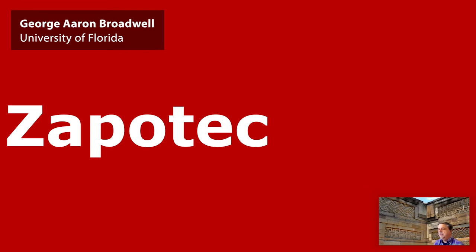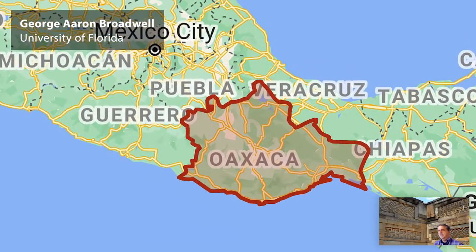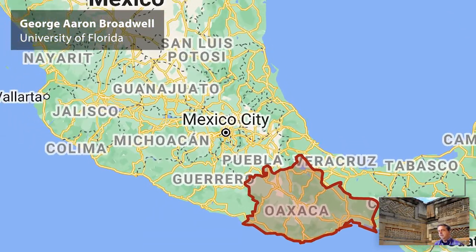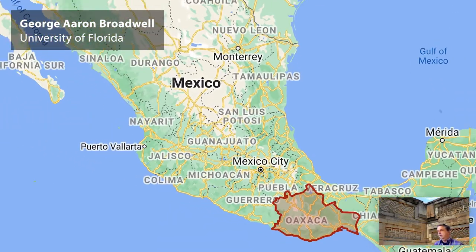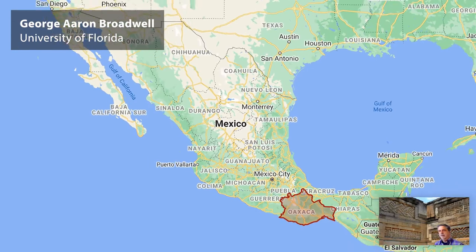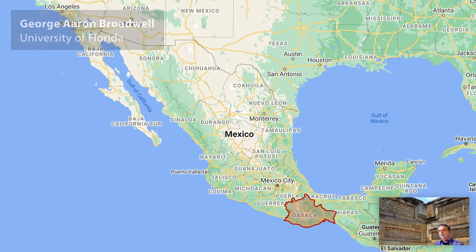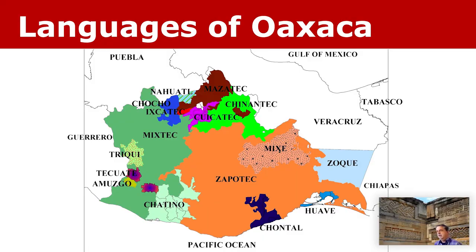The Zapotec languages are spoken in southern Mexico in the state of Oaxaca, which you see outlined on the map here. Zapotec is one of the largest languages of Oaxaca. As you can see on the map, it's spoken in central and eastern Oaxaca.